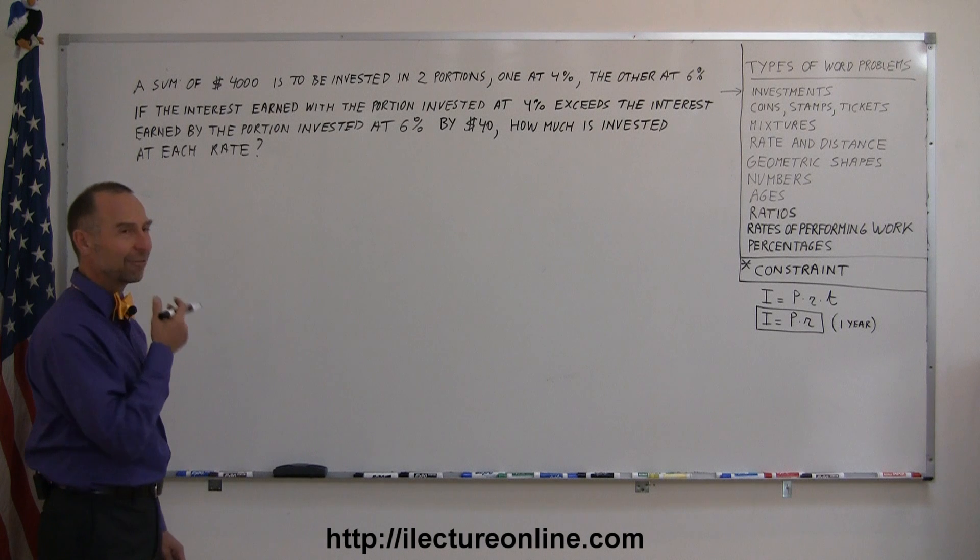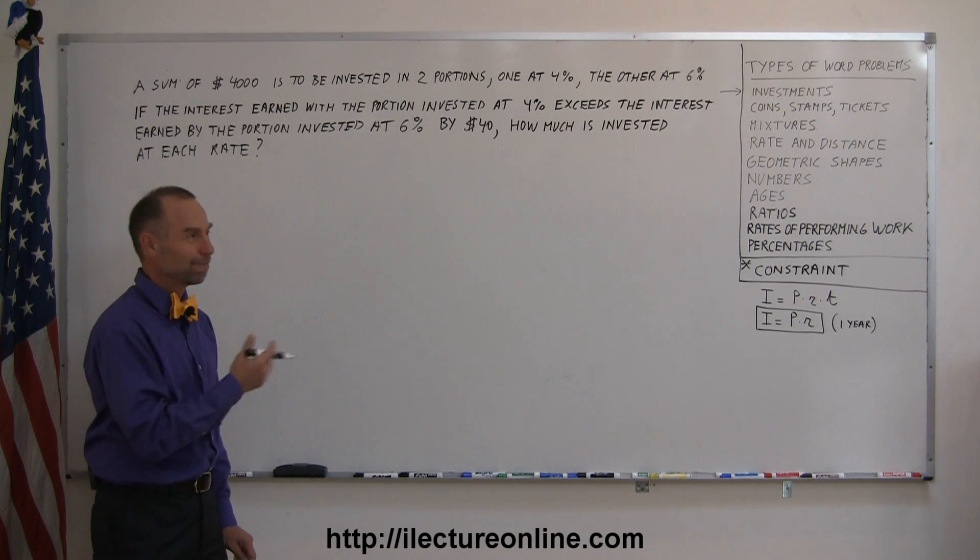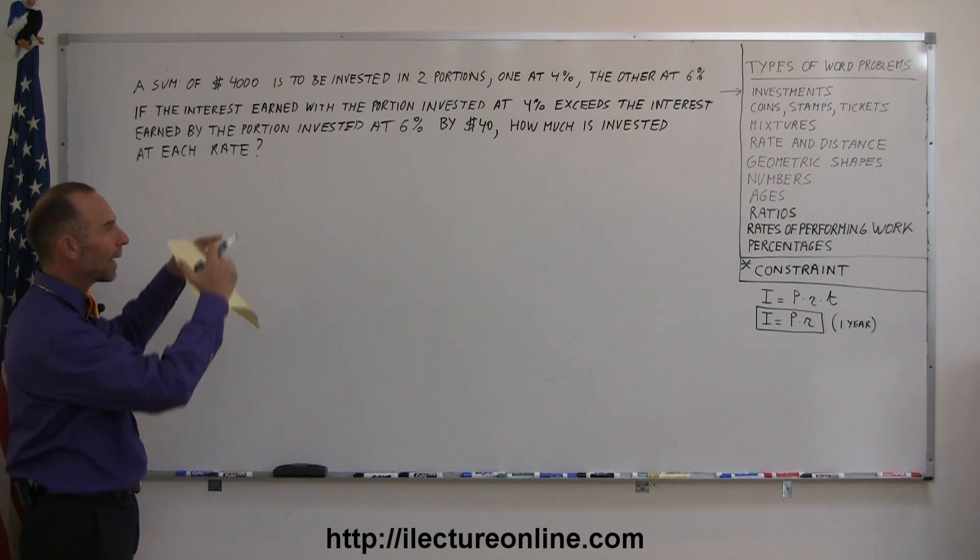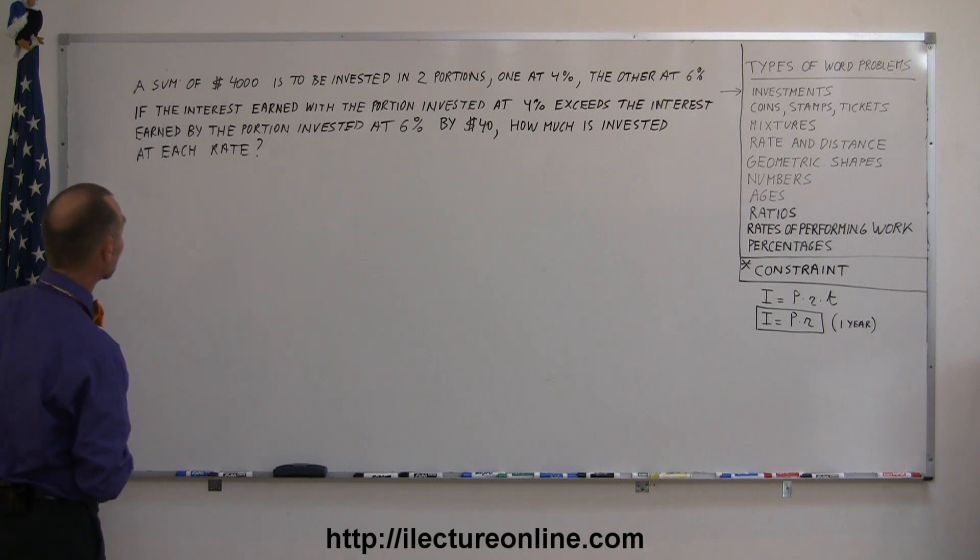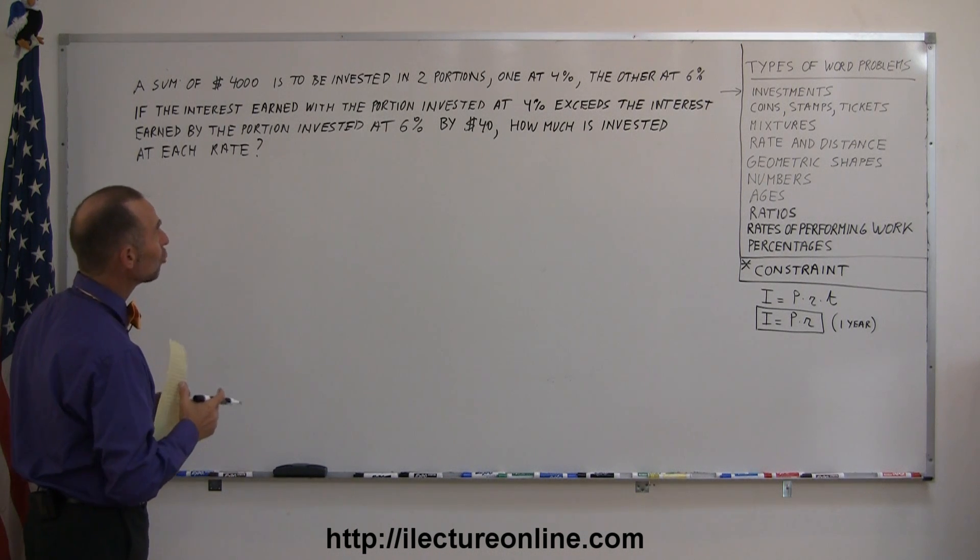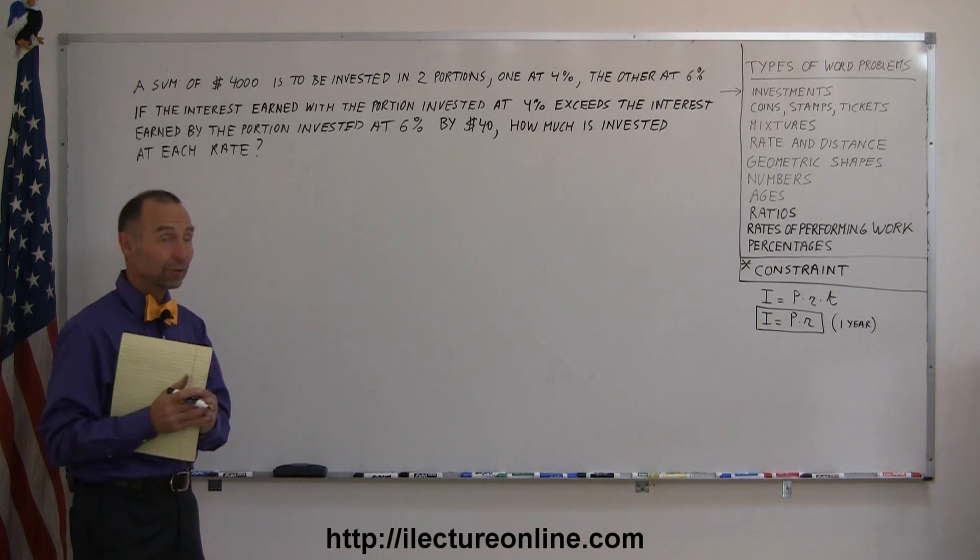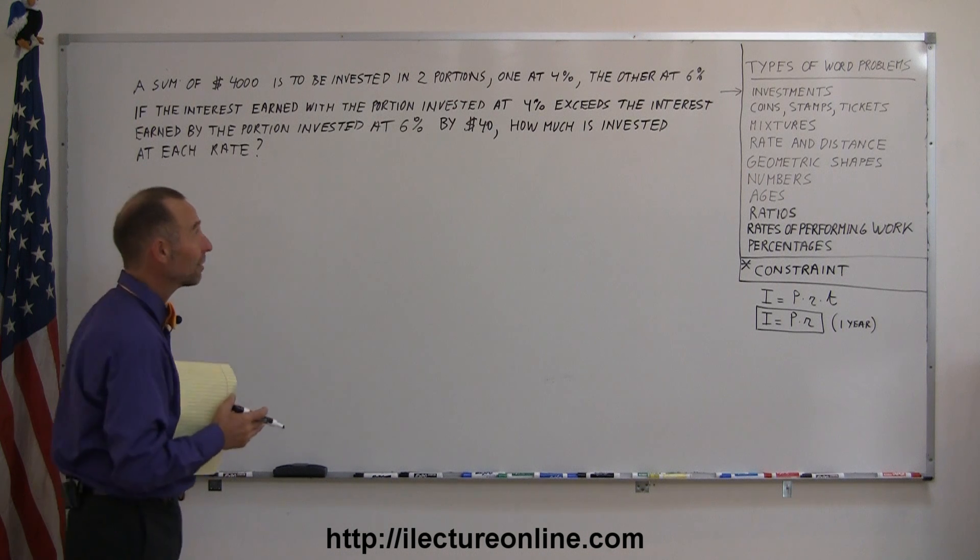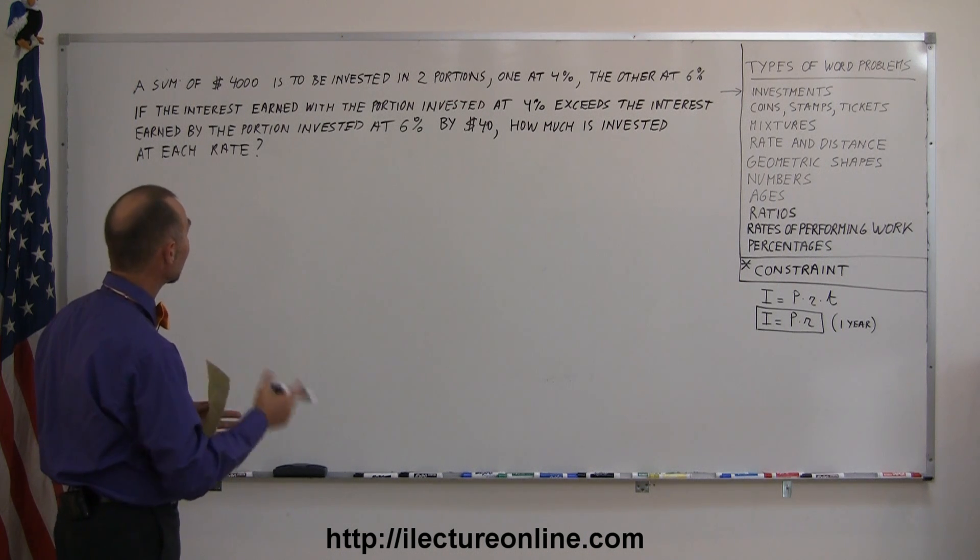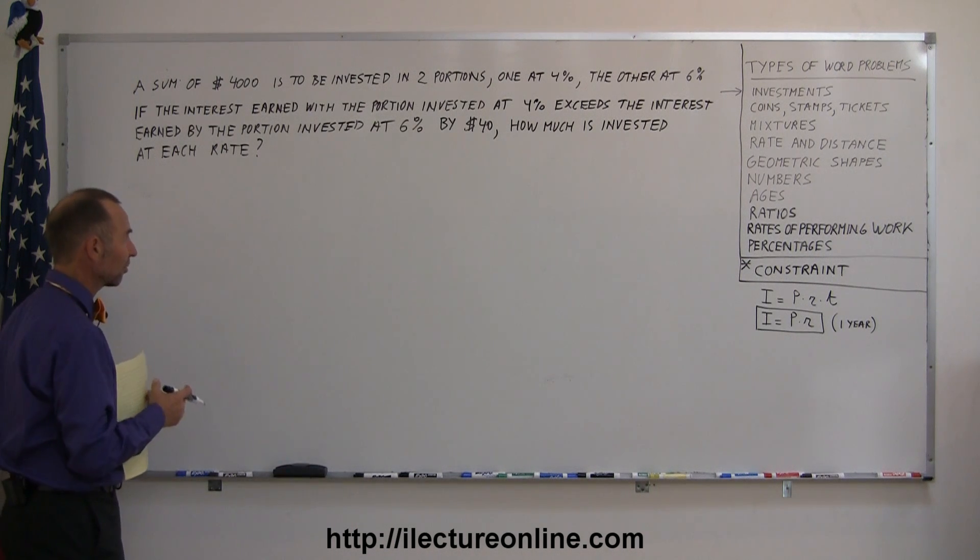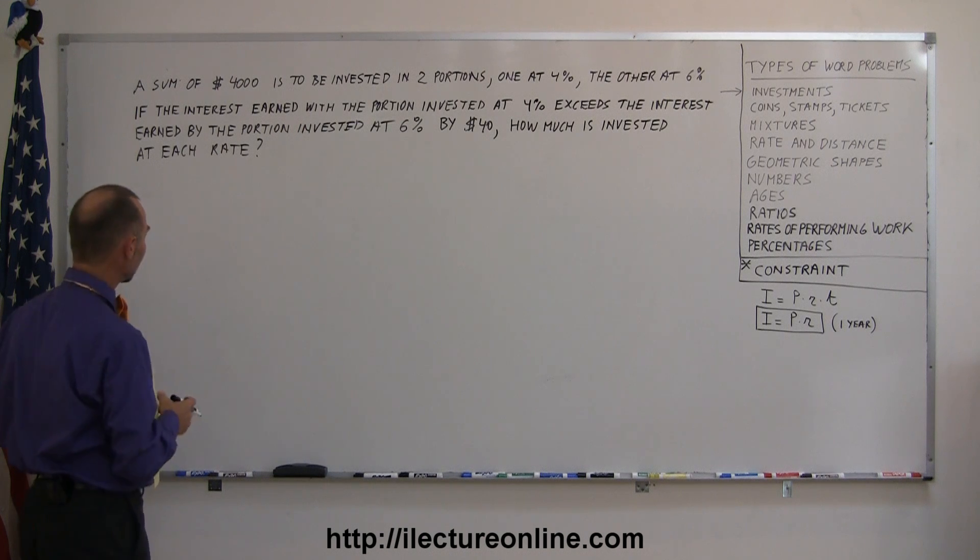If we don't have a good methodology into a problem like this, you're probably going to get stuck. So let's read it one more time and then we'll go ahead and start very systematically solving this problem. We have the sum of $4,000, total amount of $4,000, is to be invested in two portions. Part of the $4,000 will be invested at 4%, and the other part will be invested at 6%. If the interest earned with the portion invested at 4% exceeds the interest earned with the portion invested at 6% by $40, how much is invested at each rate?